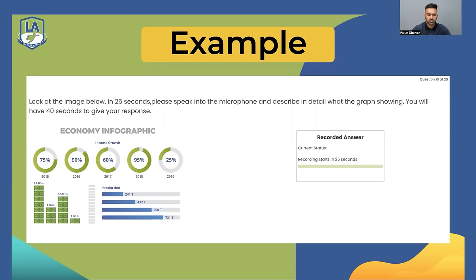For example, if you get an economy infographic image: 'The image gives information about economy infographic. It is a very beautiful image and I have to speak for 40 seconds about this image. There are a lot of different elements in the image which are 2015, 2016, and 2017. I can also see production, 241, and 432. One of the elements is maximum and the other one is minimum. To conclude, the image is informative.' This is what you have to do — you can use this template for any image you get.